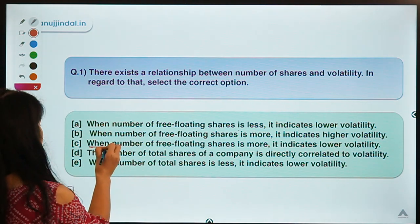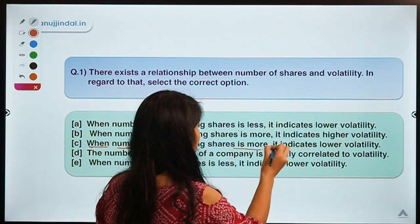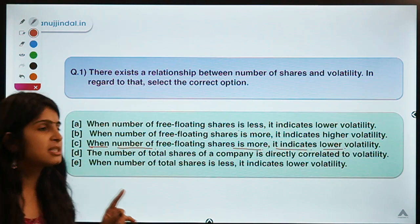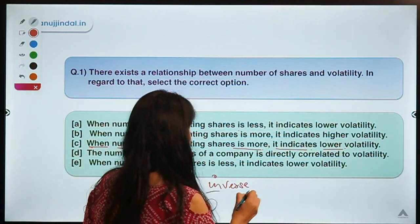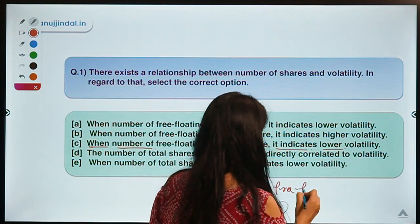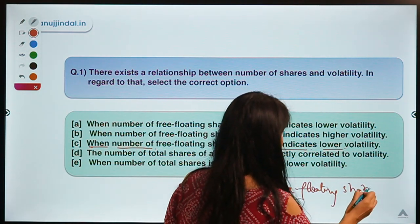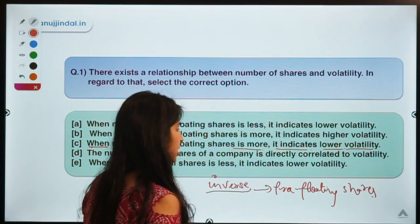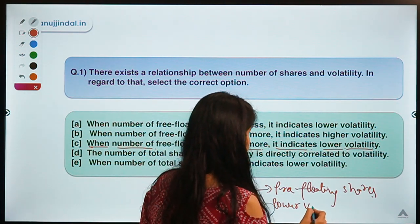The correct option is C: when the number of free-floating shares is more, it indicates lower volatility. Basically, there exists an inverse relationship between the free-floating shares of a company and its volatility.